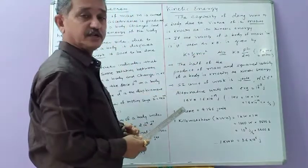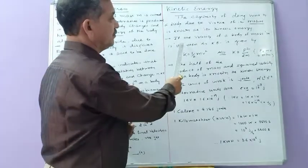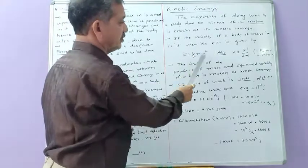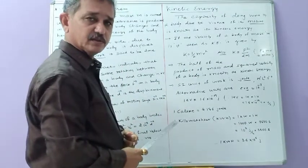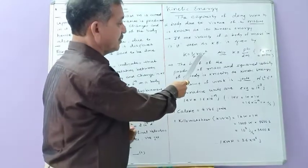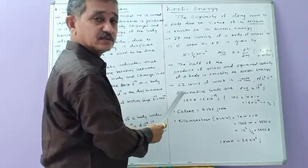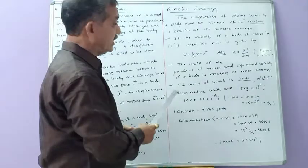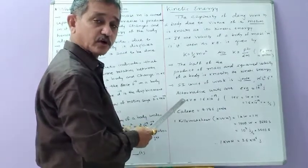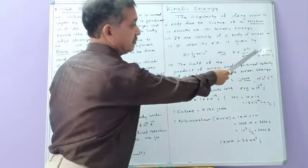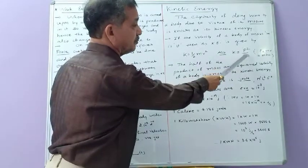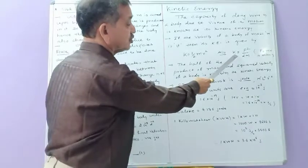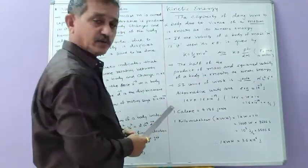The kinetic energy of a body is given by one-half mv². To derive another form, you multiply and divide by mass m to get m²v² upon 2m. Since mv equals linear momentum p, the numerator is replaced by p², and you get another equation of kinetic energy: KE = p²/2m.